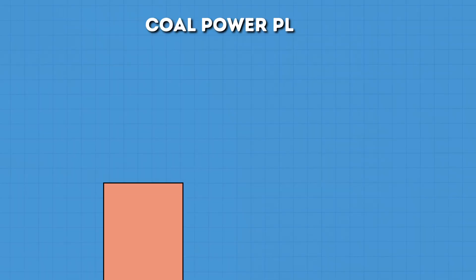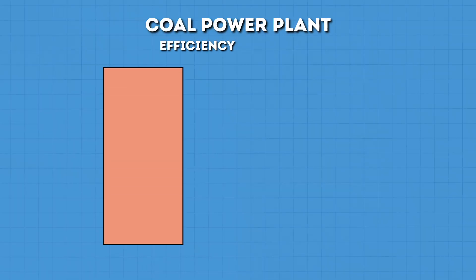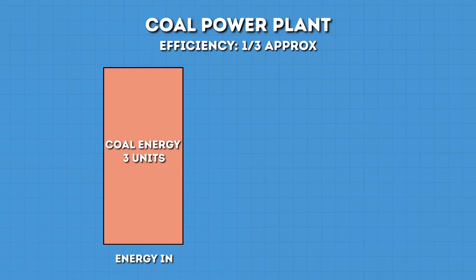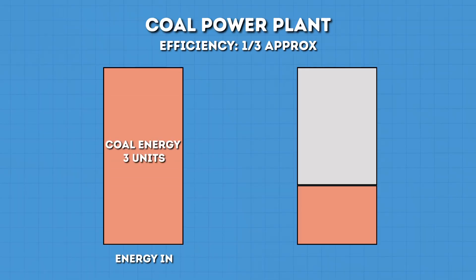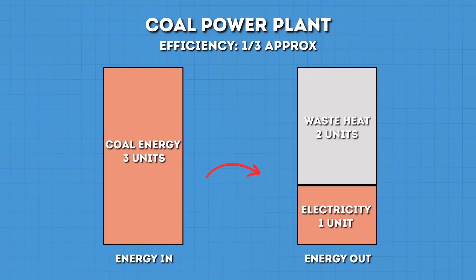This is because of inefficiencies almost exclusively from fossil fuels. For example, a typical coal plant in the US has an efficiency of 35%. In other words, from the total energy, only a third goes to electricity, whilst the other two-thirds is waste heat.